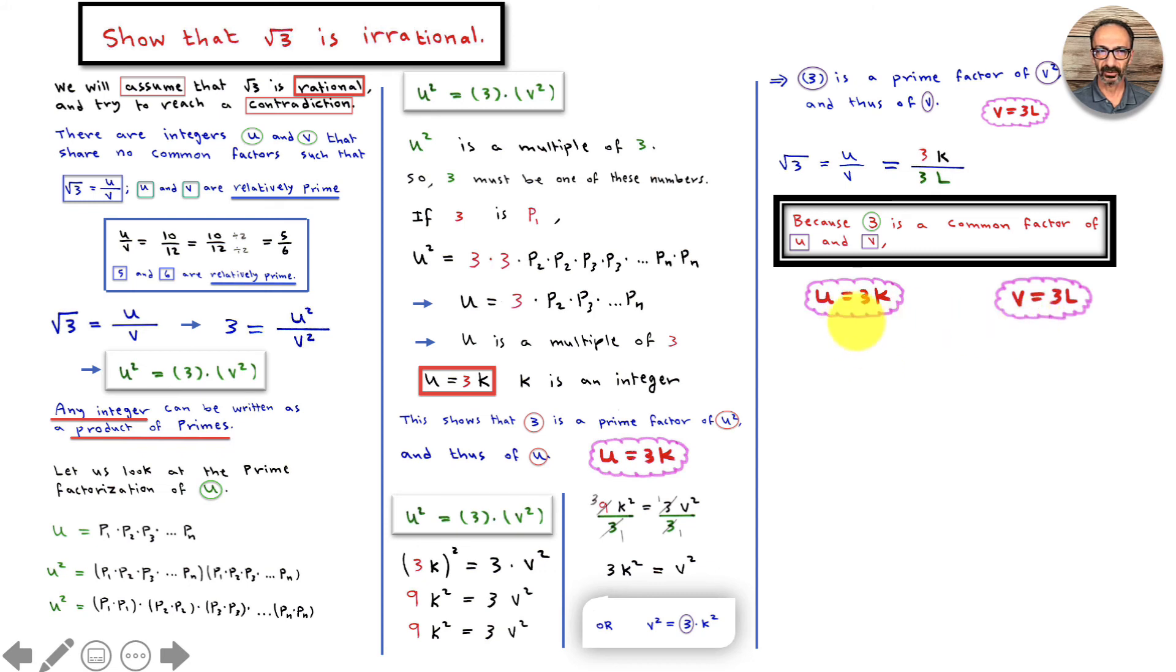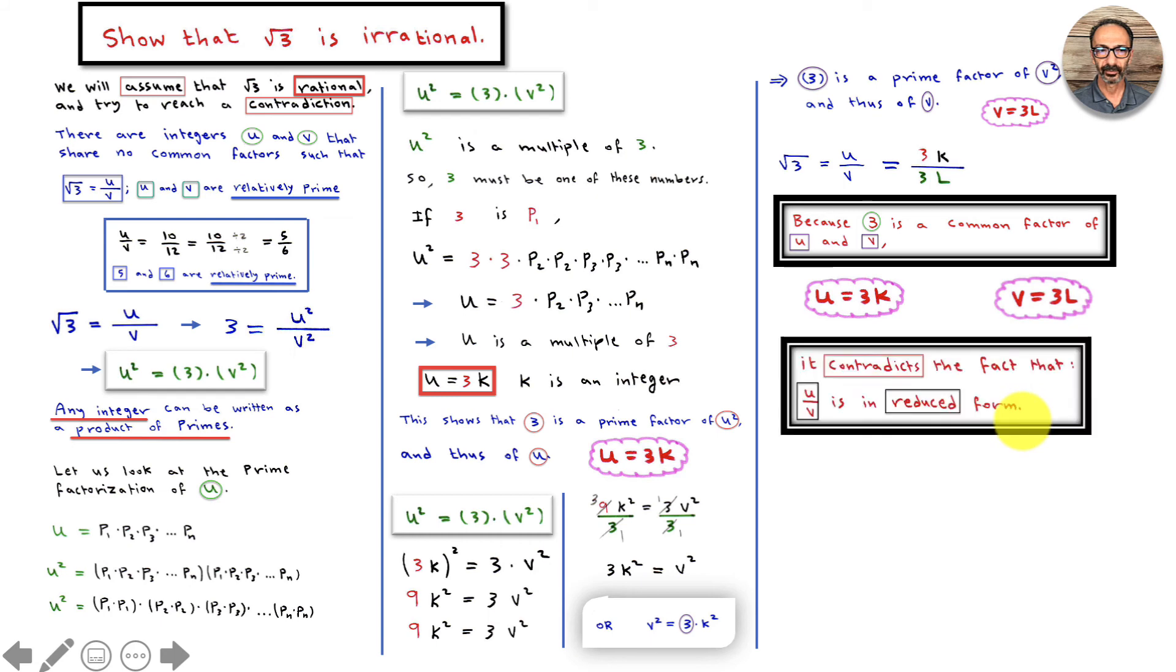It is a common factor of u and v. As you could see, 3 is in both. It contradicts the fact that u and v are in reduced form and they don't have anything in common. No common factors such that u over v is the square root of 3, and u and v are relatively prime. But that shows that they are not relatively prime. They do have a common factor. They both divide by 3.